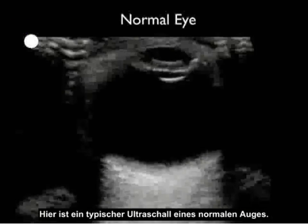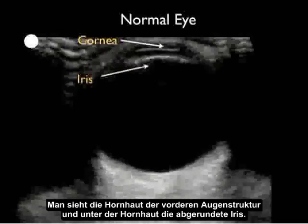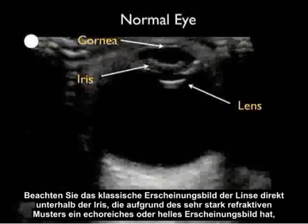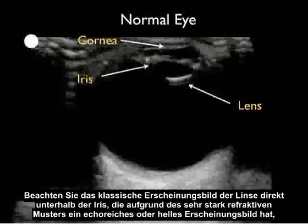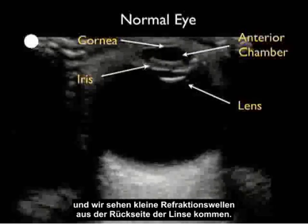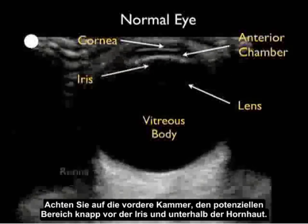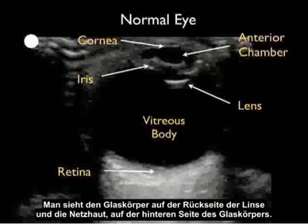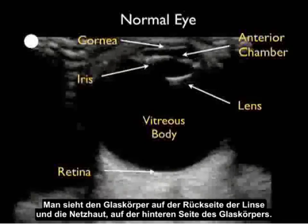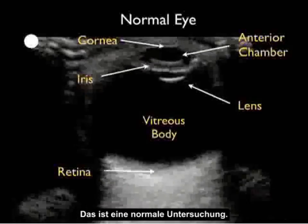Here's a typical ultrasound of a normal eye, taken in the horizontal or side-to-side probe configuration with the probe marker lateral. We see the cornea as the most anterior structure, then the rounded iris below it, and just below the iris the lens with its classic hyperechoic or bright appearance due to its hard refractive pattern, with refraction waves visible off the back of the lens. The anterior chamber appears as a potential space just anterior to the iris and below the cornea. The vitreous body lies behind the lens, and the retina is well seen at the posterior aspect — tacked down and in opposition to the posterior wall. That is a normal examination.